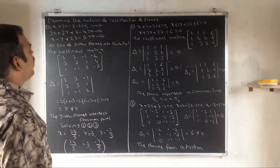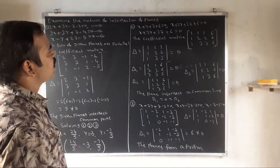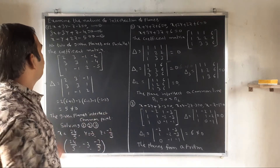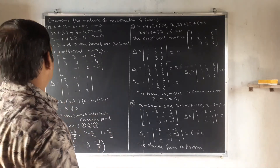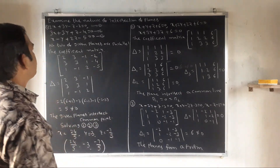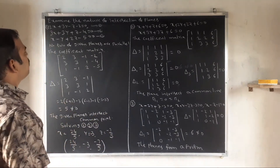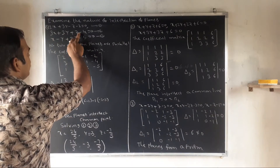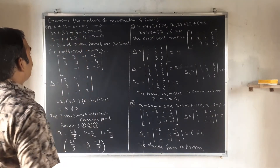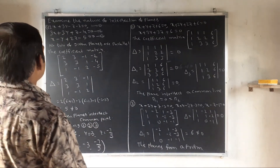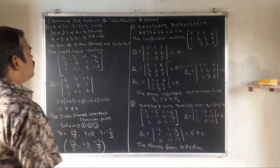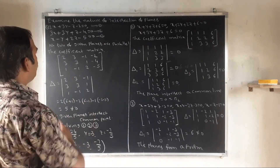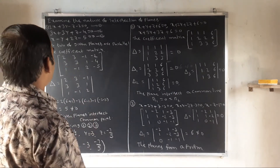Examine the nature of intersection of the following planes. Problem 1: 2x + 3y − z − 2 = 0; 3x + 3y + z − 4 = 0; x − y + 2z − 5 = 0. Check that none of the planes are parallel.